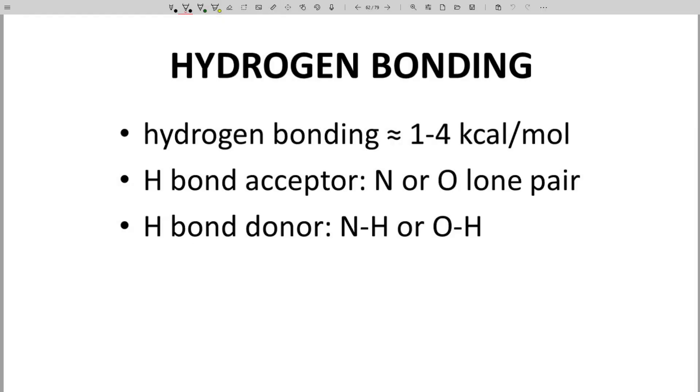Hydrogen bonding is very important for potency. A hydrogen bond gives a bump to binding energy of around one to four kcals per mole. This involves an N or O hydrogen bond acceptor and nitrogen or oxygen with a lone pair interacting with an NH or OH hydrogen bond donor. The strength of the hydrogen bond varies with charge.